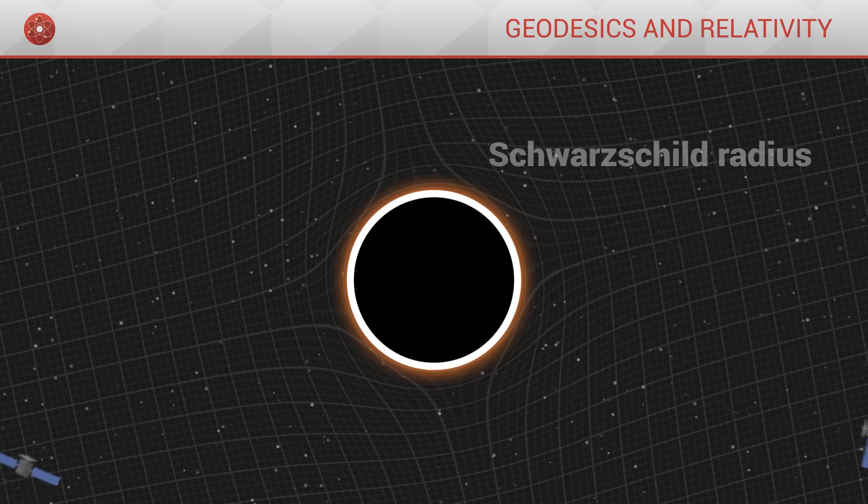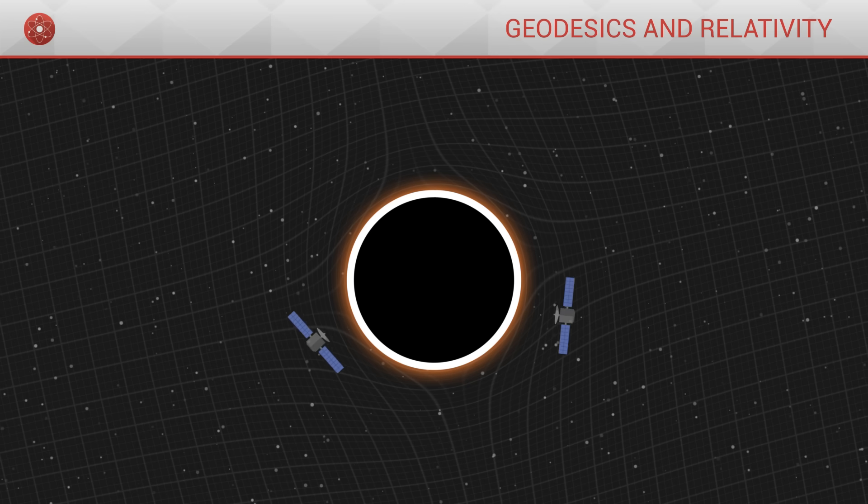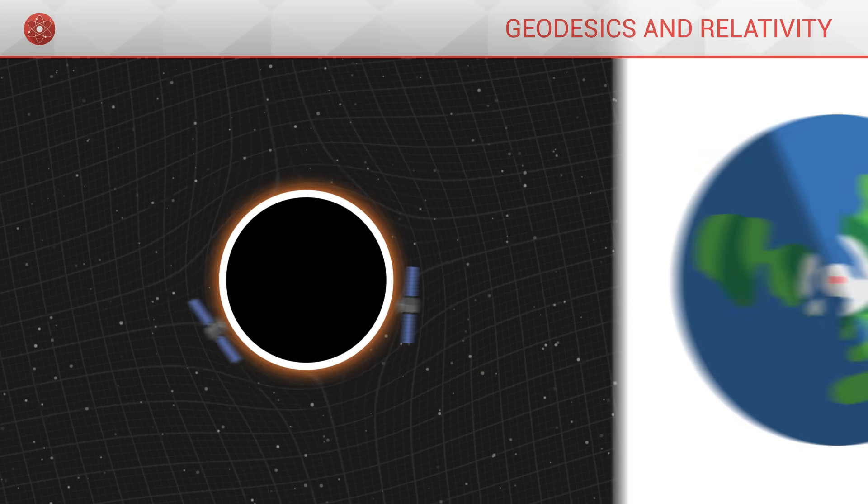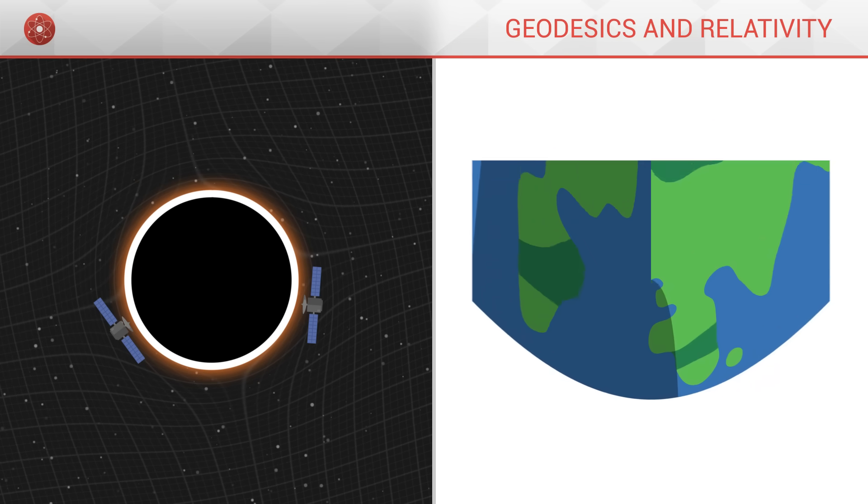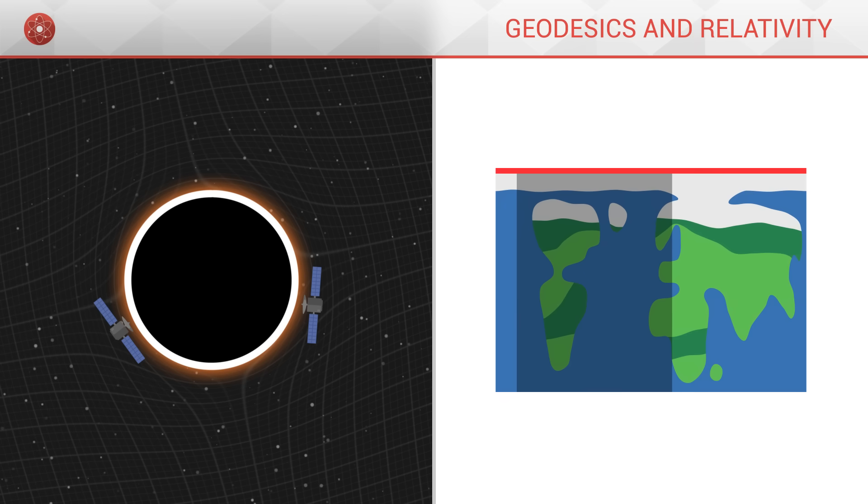As seen from outside, no object can cross this horizon. That said, it is just an illusion, like the North Pole on Earth, which breaks apart when we flatten it on a map. An apparent singularity.